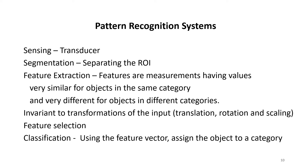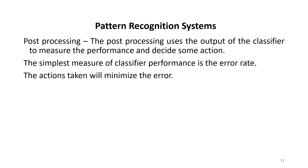From the available features, the important ones are to be selected. Classification means using the feature vector, the object will be assigned a category. Post-processing uses the output of the classifier to measure performance, and based on that some action will be decided. The simplest measure of classifier performance is the error rate, and the action taken will minimize the error.